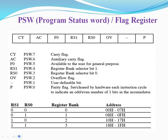This is the PSW register. The first bit is P, the parity flag — it is set to 1 if the parity is odd and 0 if the parity is even. OV is the overflow flag, set to 1 if data has overflowed. RS0 and RS1 are used to select the register banks. F0 is unused. AC is the auxiliary carry flag and CY is the carry flag.